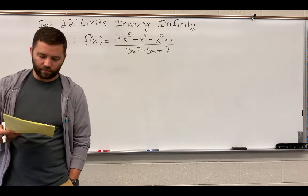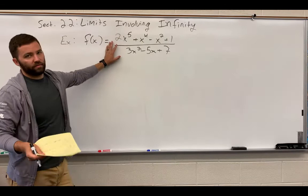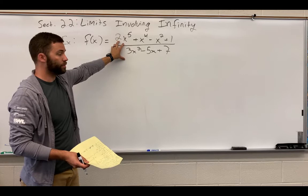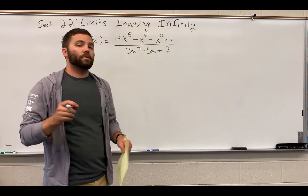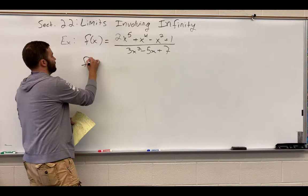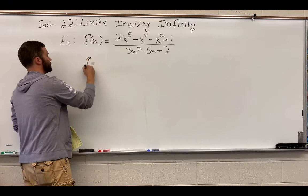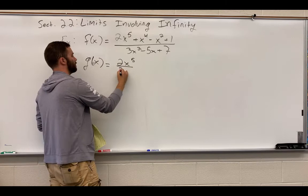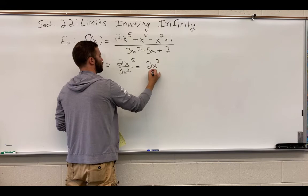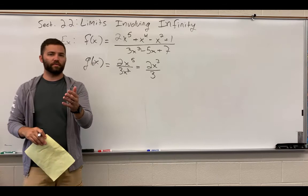All right? And I want to figure out what the end behavior model is for this function. Well, it's going to look like this. And we can prove this with the definition although we're not going to. But it's going to be the highest power term in the top polynomial divided by the highest power term in the bottom polynomial. So, what you'll get here is g of x is equal to 2x to the fifth over 3x squared. That simplifies to 2x to the third power divided by 3. And that ends up being your end behavior model.